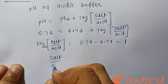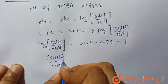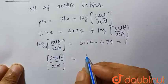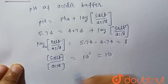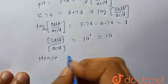Salt upon acid, that is concentration of salt upon concentration of acid, will be when it goes to the left hand side, it becomes 10 to the power 1, that is equal to 10.